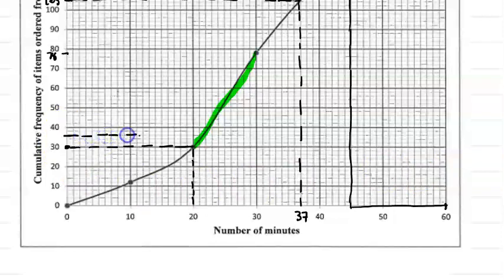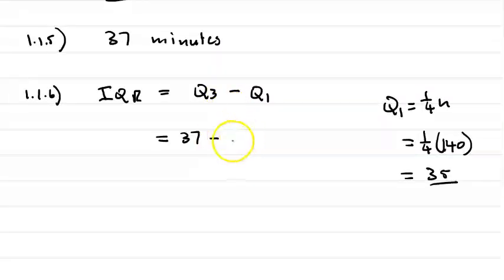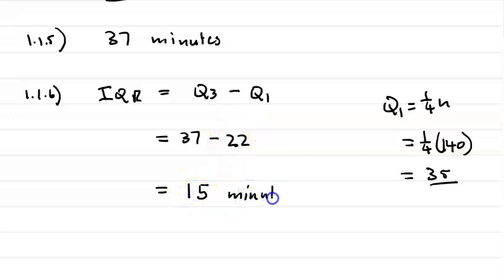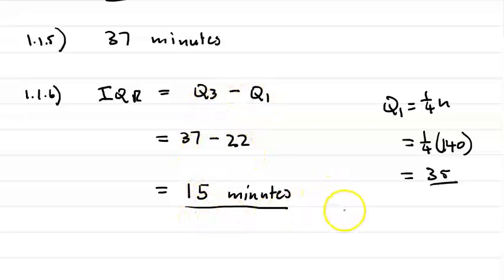Reading from the curve at the 35th value gives approximately 22 minutes. Remember, a range of answers will be accepted in the exam, but try to be as accurate as possible using your ruler. So Q1 = 22 minutes. Therefore, the interquartile range = Q3 minus Q1 = 37 minus 22 = 15 minutes.